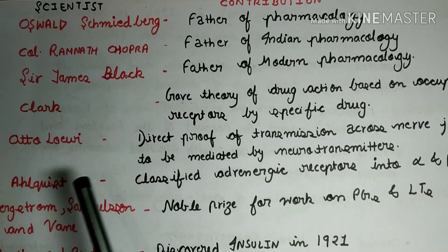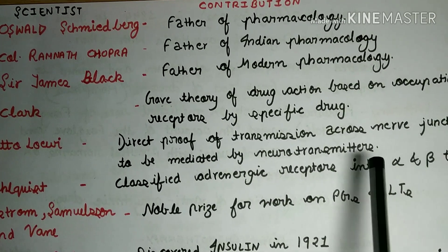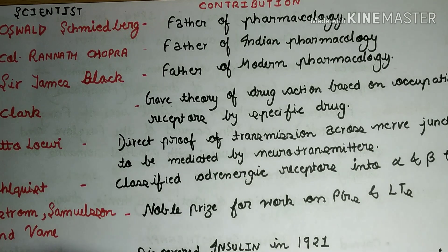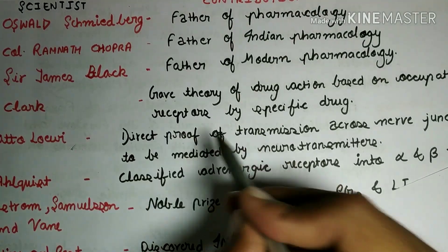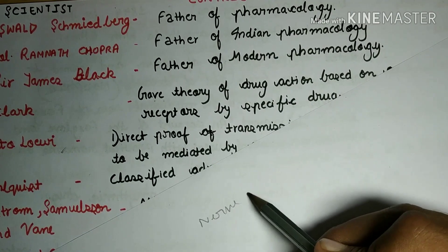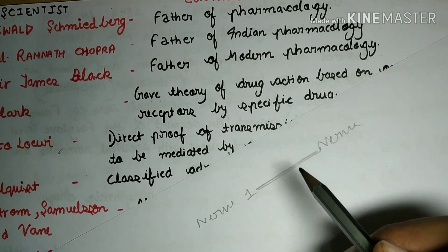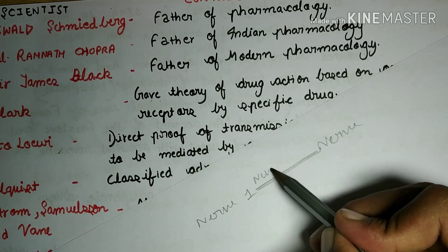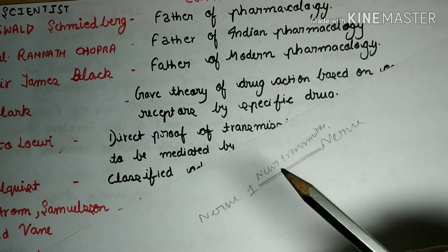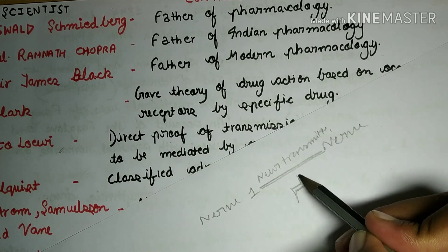The next scientist is Otto Loewi. He gave direct proof that transmission across nerve junctions is mediated by a neurotransmitter. In his concept, he proposed that the signal between two nerves travels in the form of a neurotransmitter, whereas previously it was considered to be electrical.